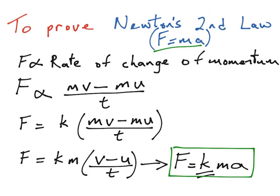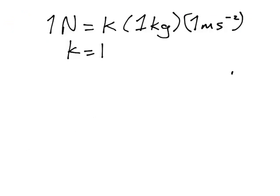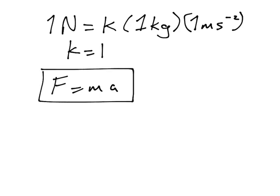So when we go back to our formula, if we substitute in the number one for k, we then get, as expected, our formula f is equal to ma, which is a particular special case of Newton's second law, as long as that constant is equal to one.